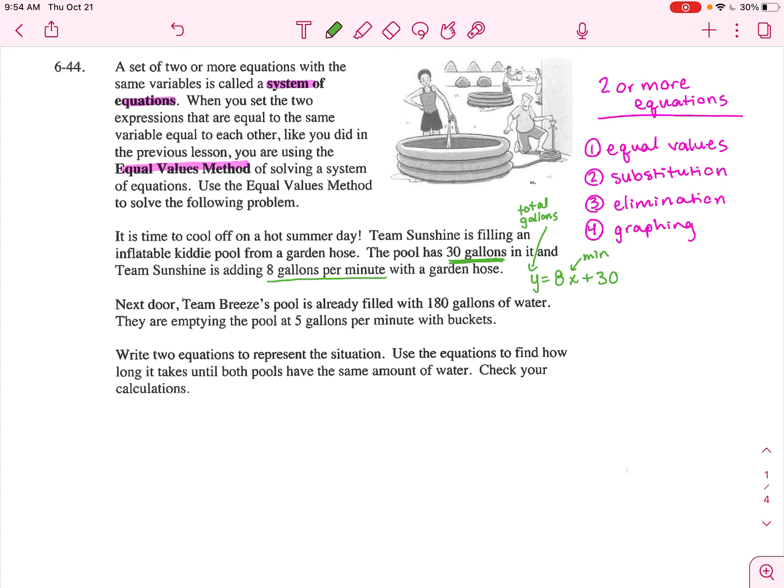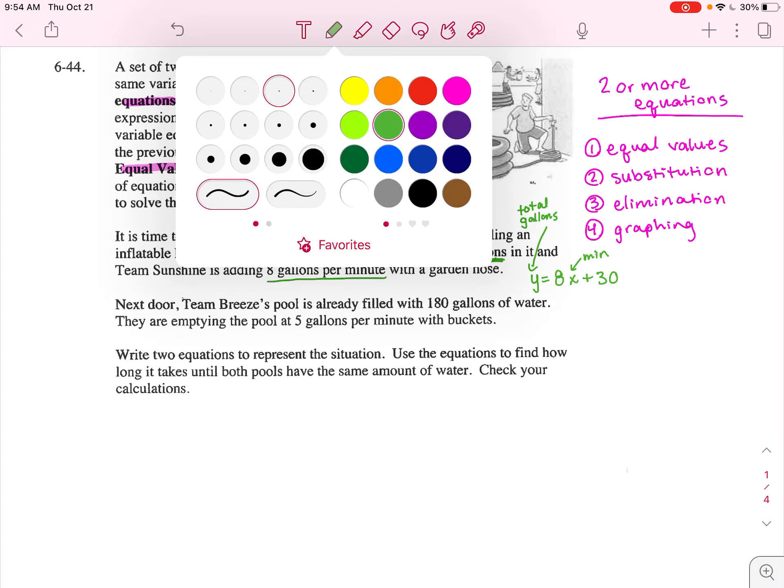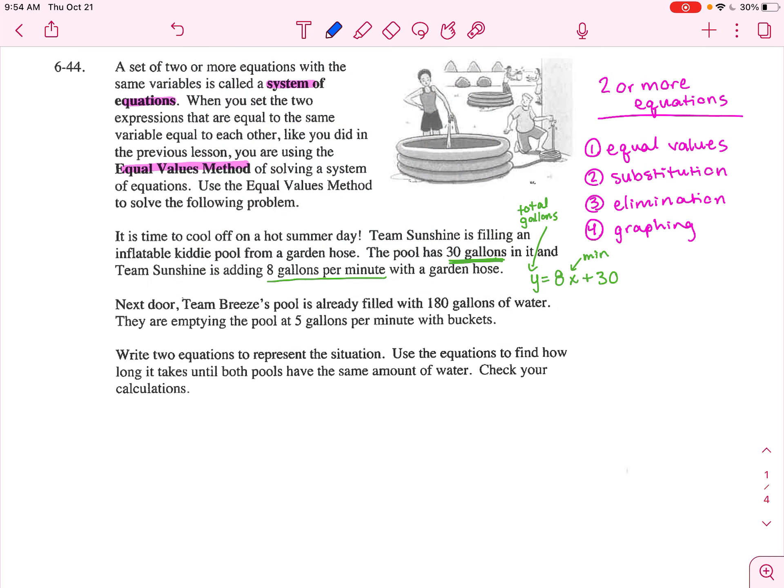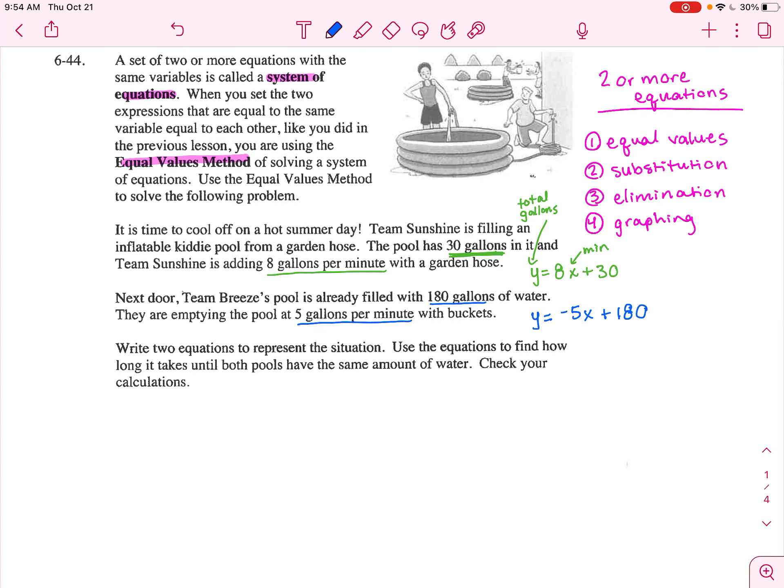Well, next door, Team Breeze's pool is already filled with 180 gallons of water and they're emptying the pool at 5 gallons per minute. So the total gallons is going to decrease, so our slope is negative, by 5 gallons per minute and they already have 180 gallons in the pool. Well, there's our system of equations.